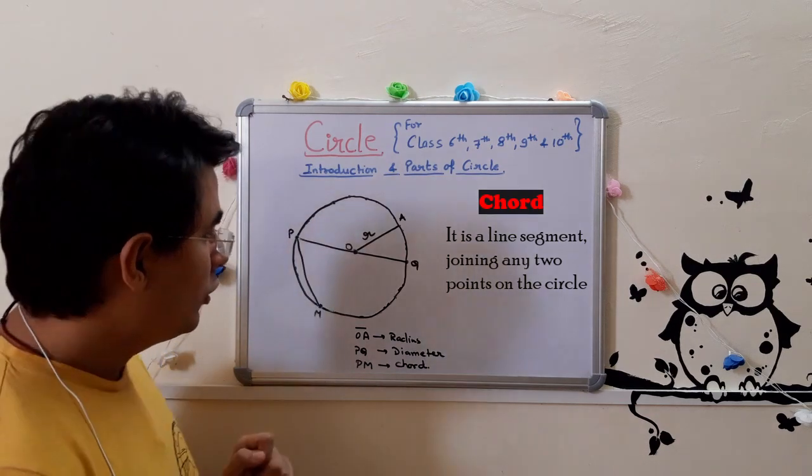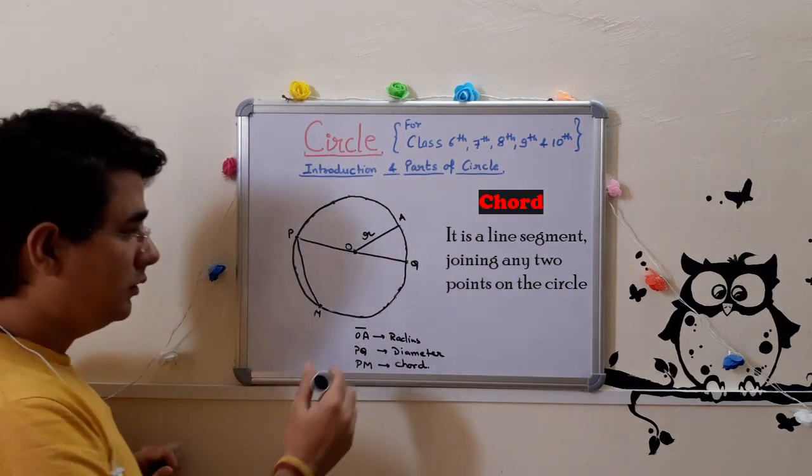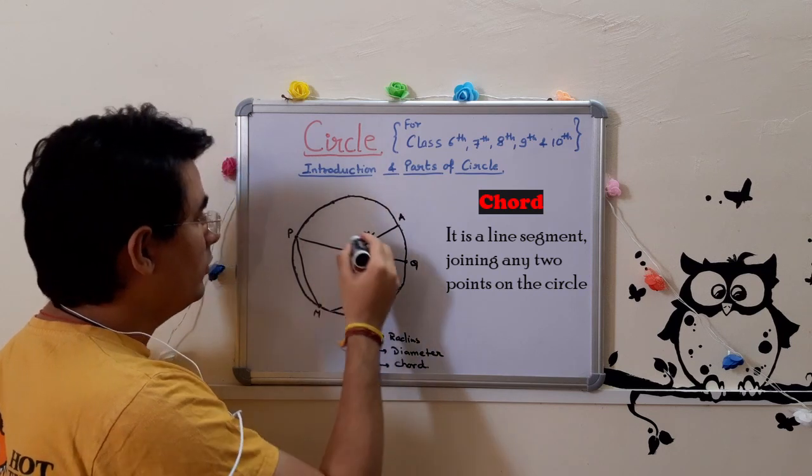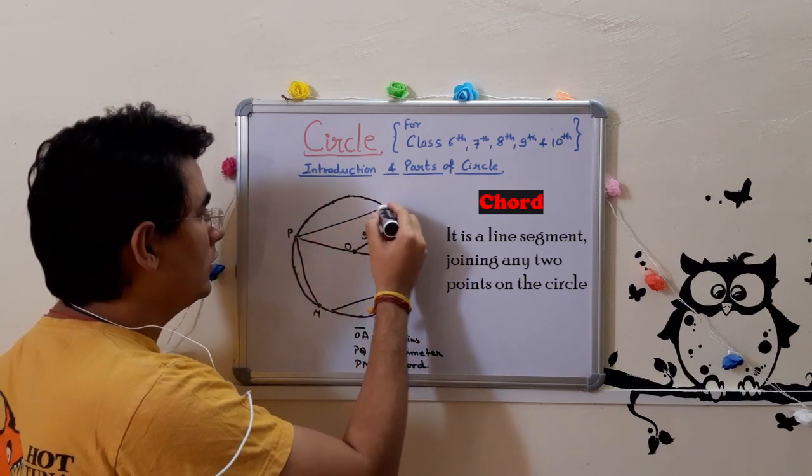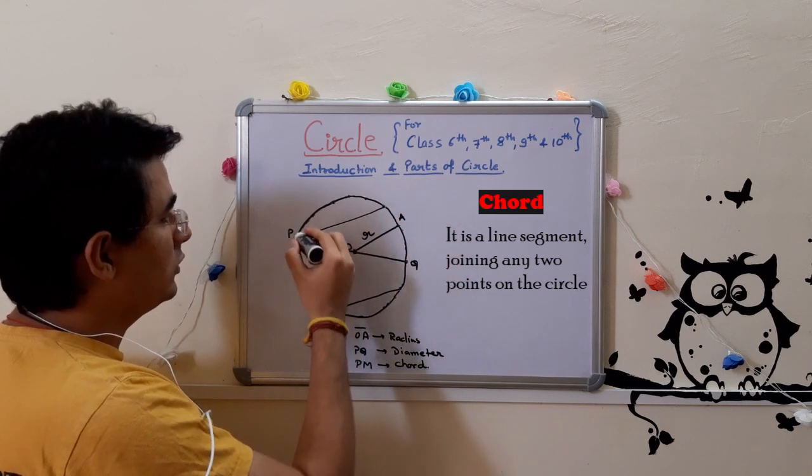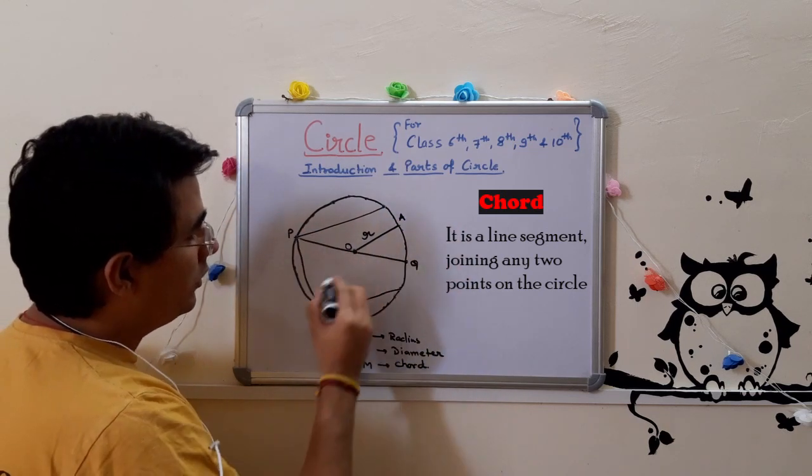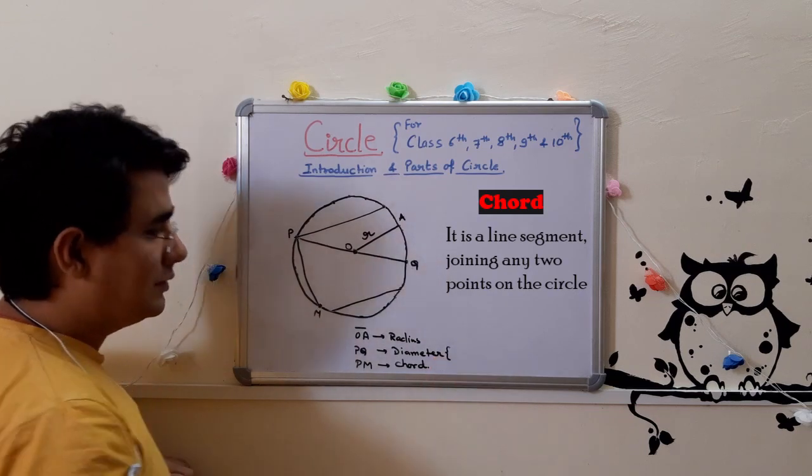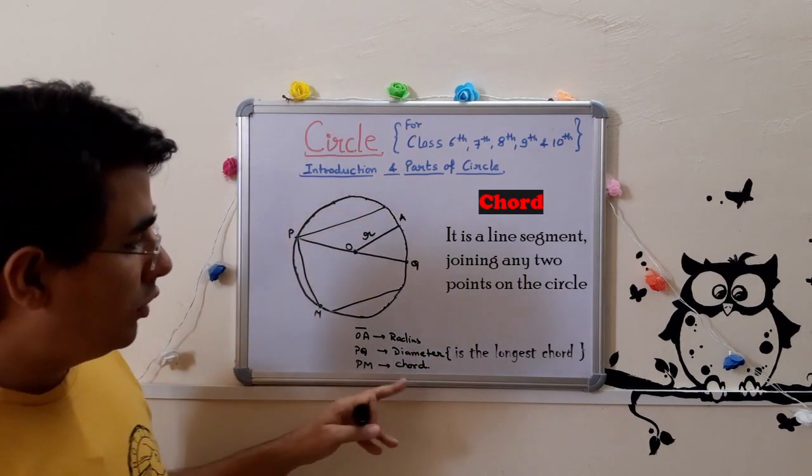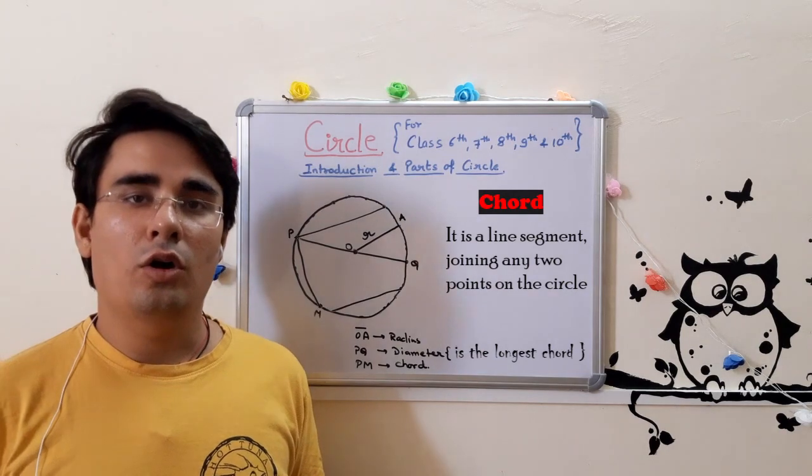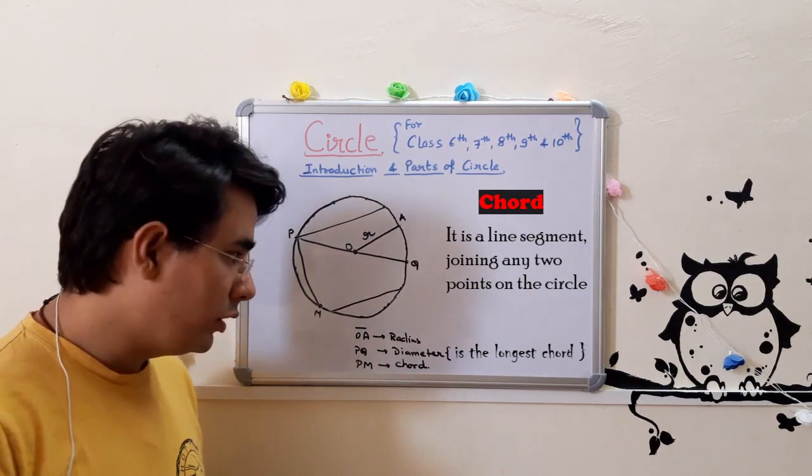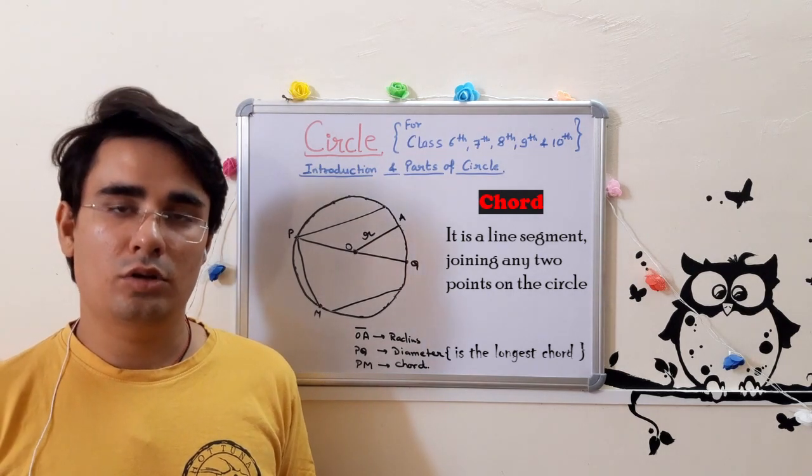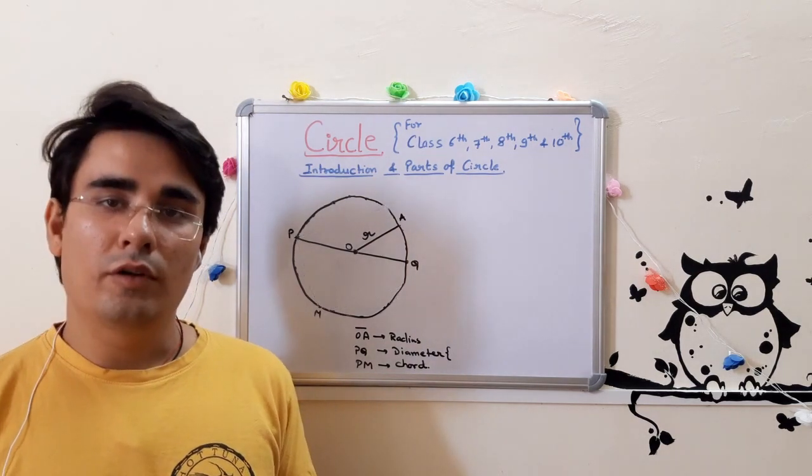This is a very important point. This is a chord. This is also a chord. This is a chord. PQ is also a chord, so diameter is the longest chord.